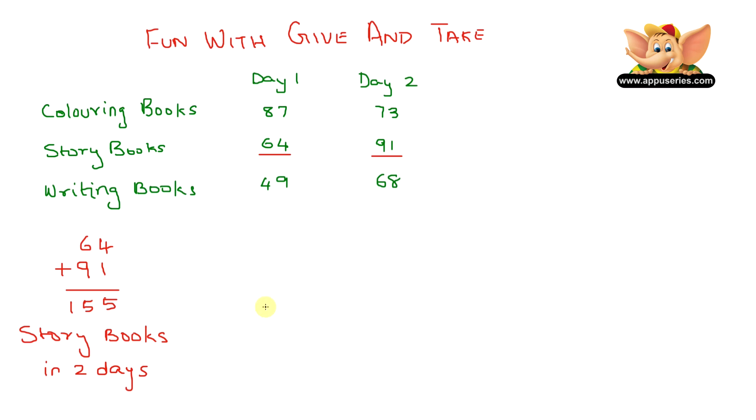Now here's the next question. Did he sell more coloring books than he sold story books in two days? Let's look back at the table. Let's write 87 from day 1, plus 73 from day 2. Now let's add them up from the ones column.